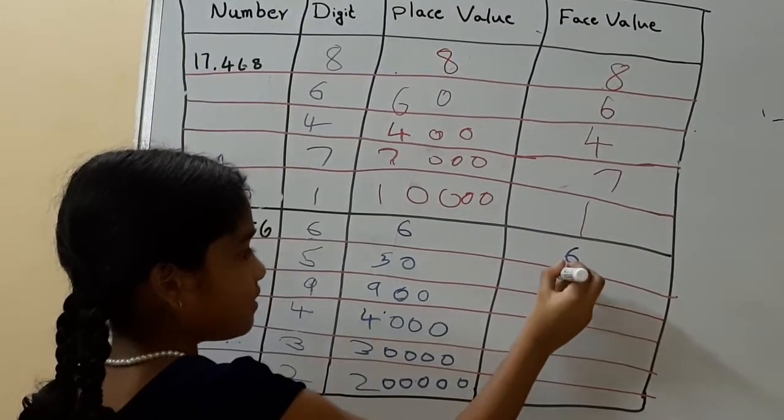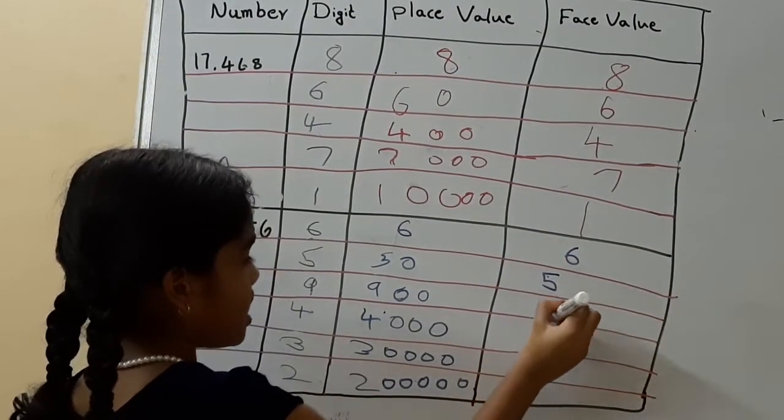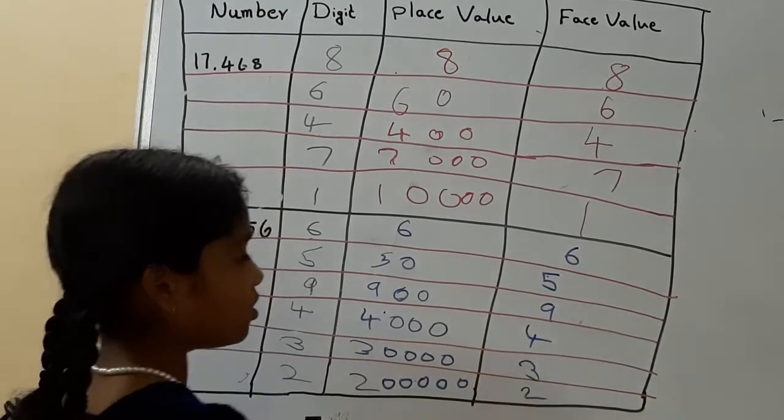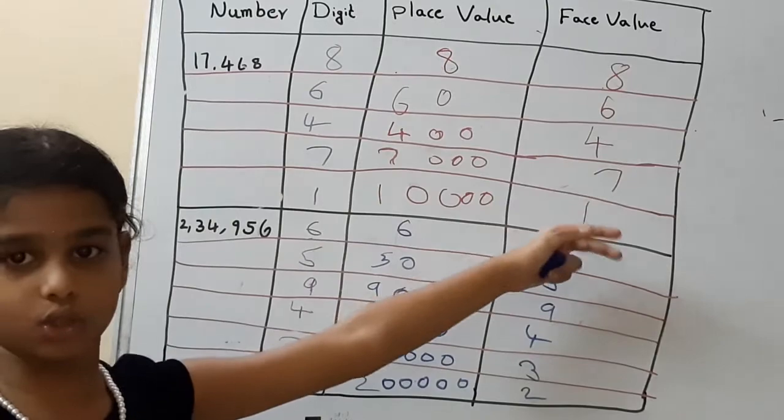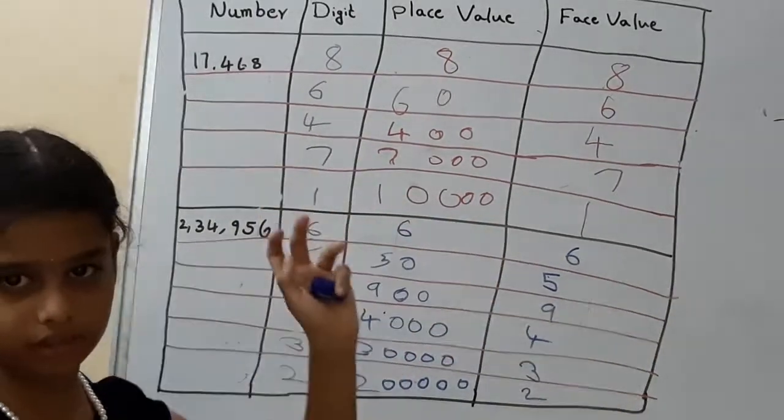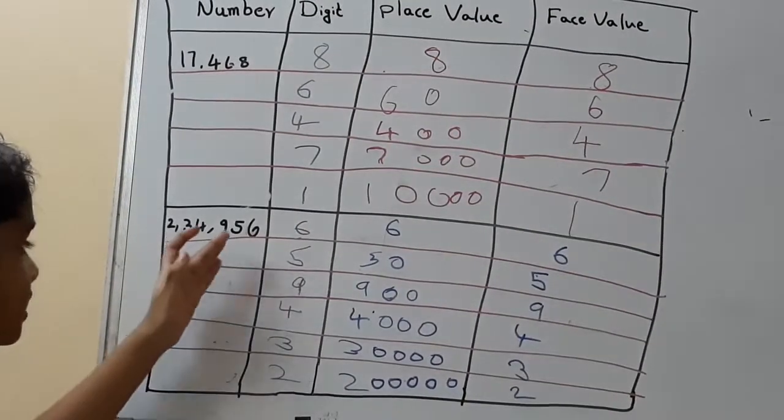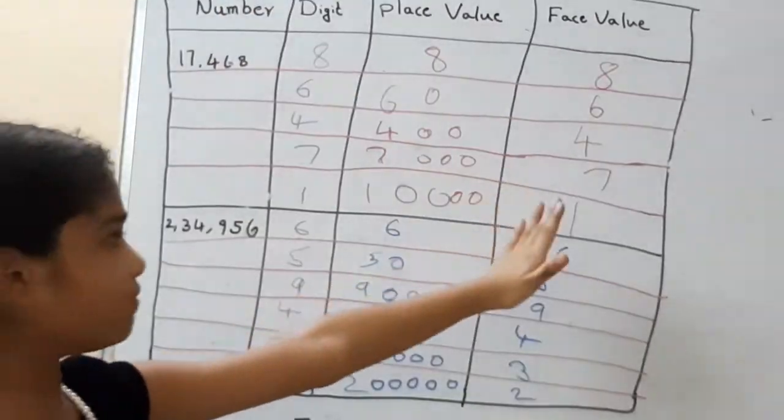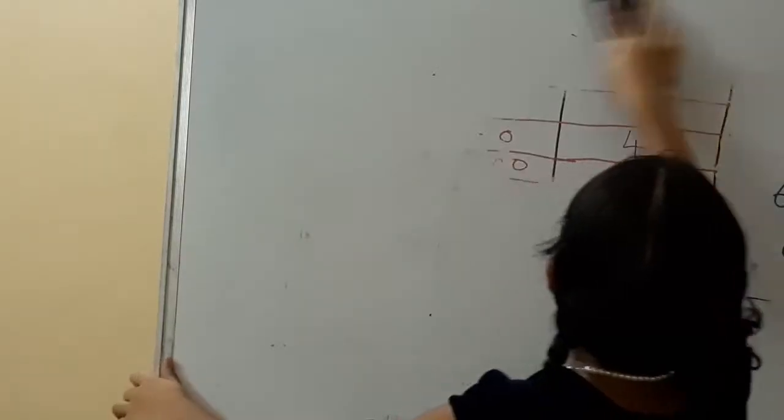So for the face values, keep 6, 5, 9, 4, 3, 2. Because the face value, no zeros will be there. So if the face value is different, the face value is different. Thank you for watching this video. Please subscribe, like and share it. Bye-bye.